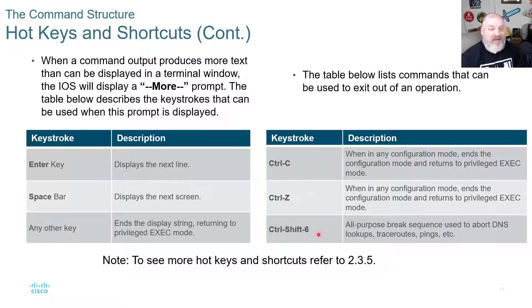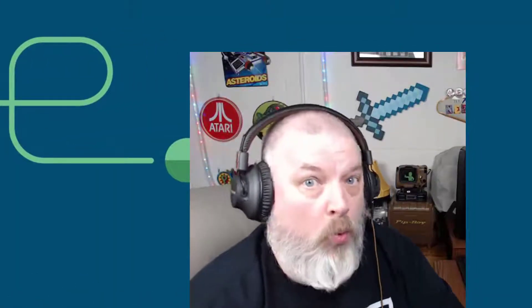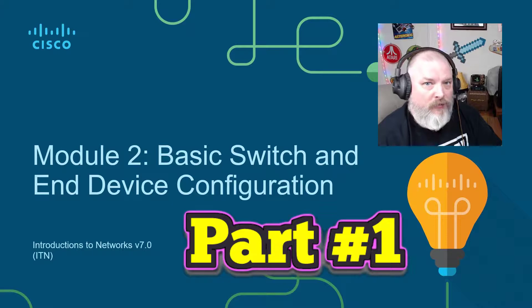Control+Shift+6 is an all-purpose break sequence used to abort DNS lookups, trace routes, pings, and so on. If you're in a DNS lookup that's taking a long time — for instance, because you haven't configured the 'no ip domain-lookup' command — you can use Control+Shift+6 to break out. This has been Module 2, Part 1 for Introduction to Networks for NetAcad. You can find the link to Part 2 in the description below.